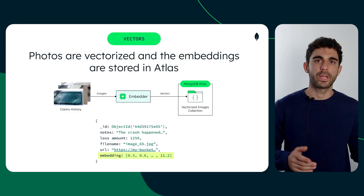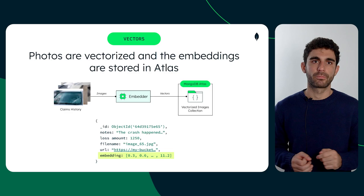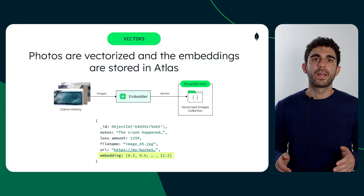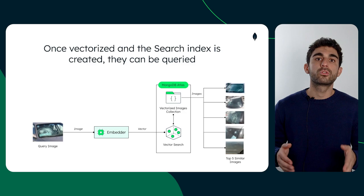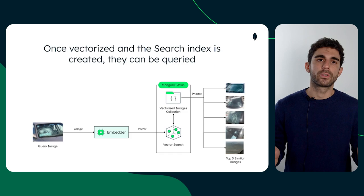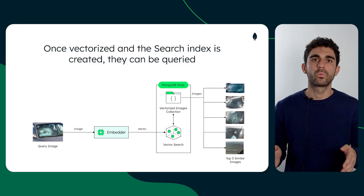We see how the schema has been augmented with the field name Embedding, which contains the vector representation of the image that our model generated. At the end of the video, we'll jump into code examples and we'll see how this works in practice. At this stage, we have created the search index and stored our vectors into the collection, and we are ready to query the data. As shown in the diagram, the first thing we need to do is vectorize the query image and pass it to Atlas. The query syntax is also shown later on when we'll go through the code.